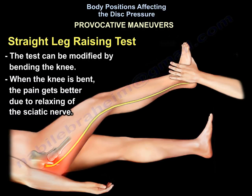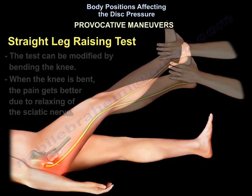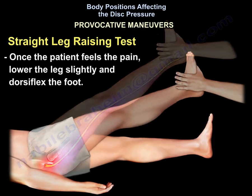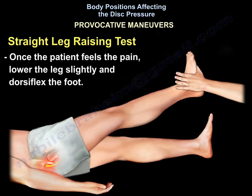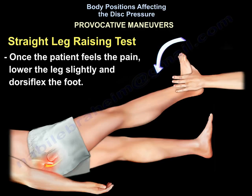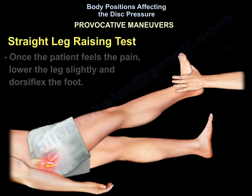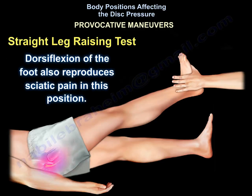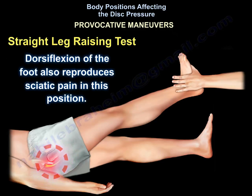The test can be modified by bending the knee — when the knee is bent, the pain gets better because it relaxes the nerve. Once the patient feels the pain, lower the leg slightly and dorsiflex the foot. Dorsiflexion of the foot also reproduces sciatic pain in this position.